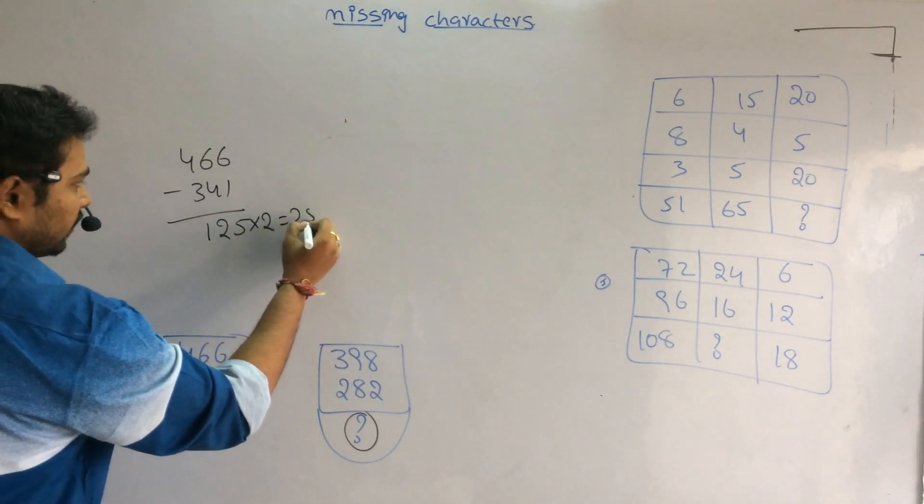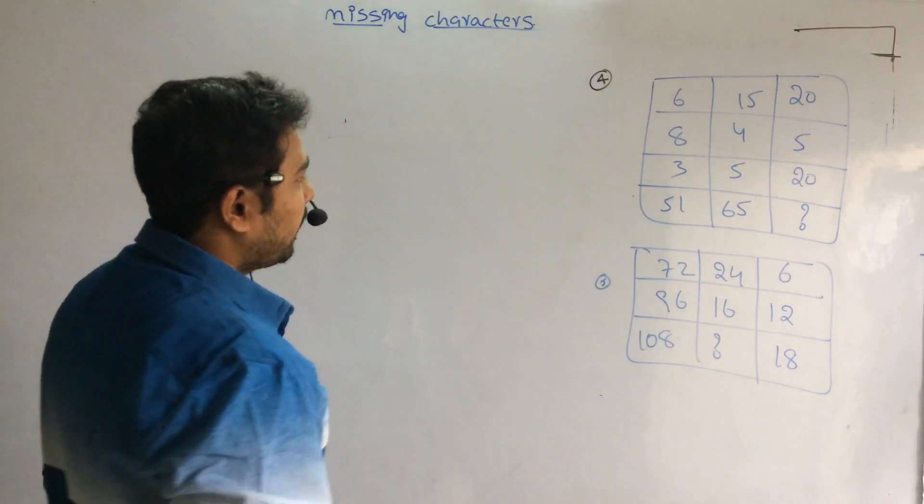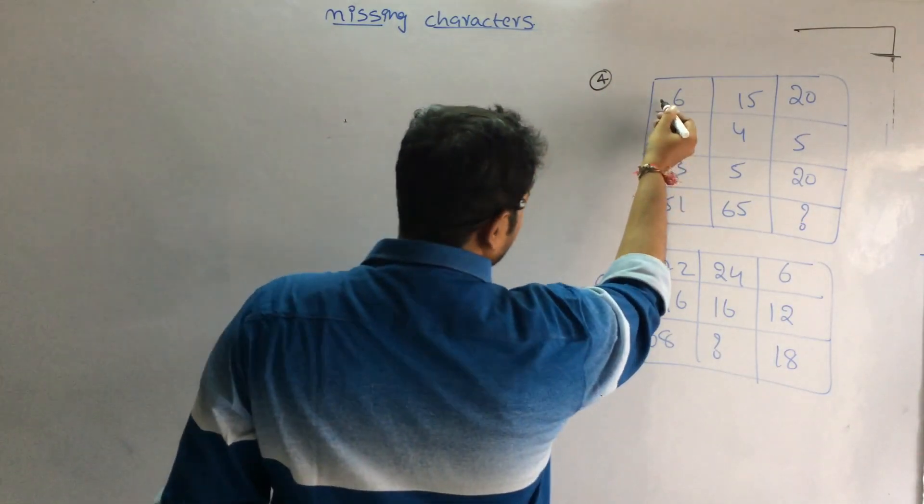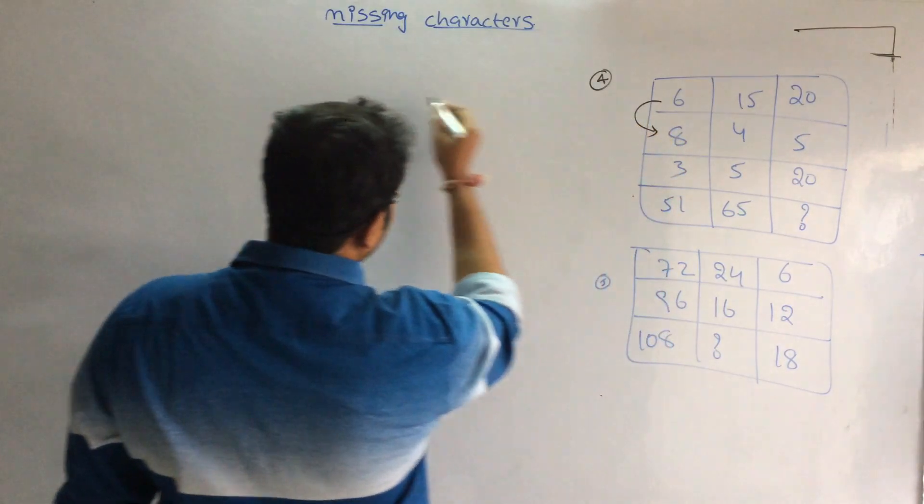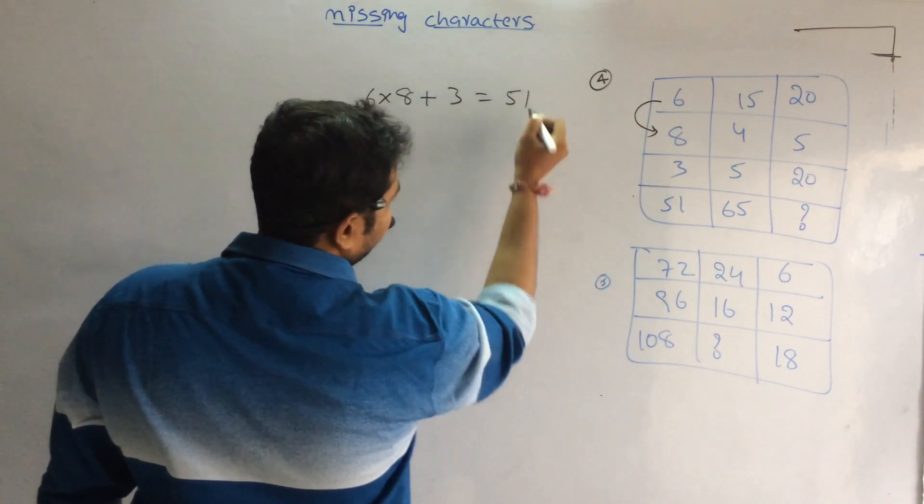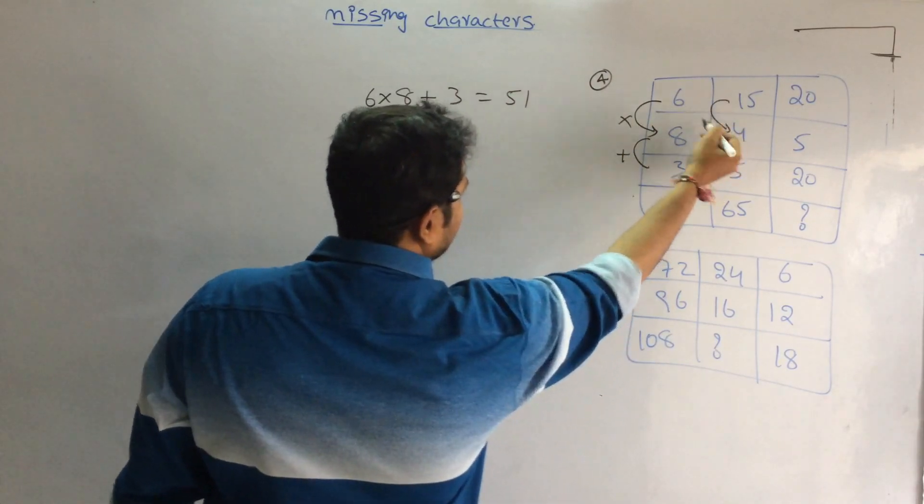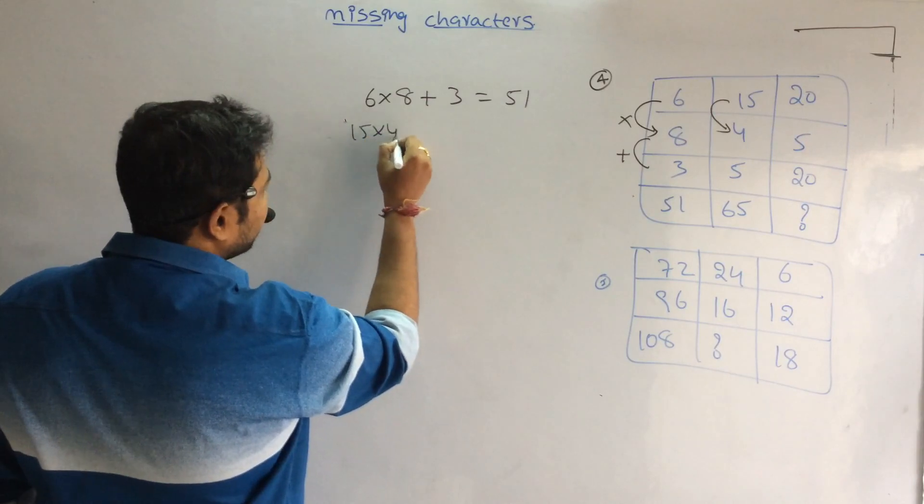Fourth question: 6×8 is 48, 48 plus 3 is 51. Multiplication then addition. Likewise, 15×4 is 60, plus 5 is 65. Likewise, 25×5 is 100 plus 20 is 120. Answer is 120.